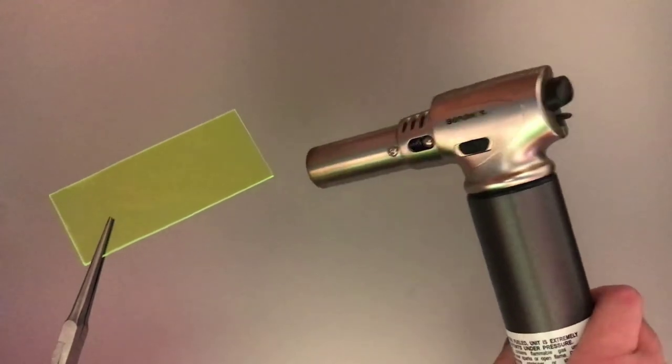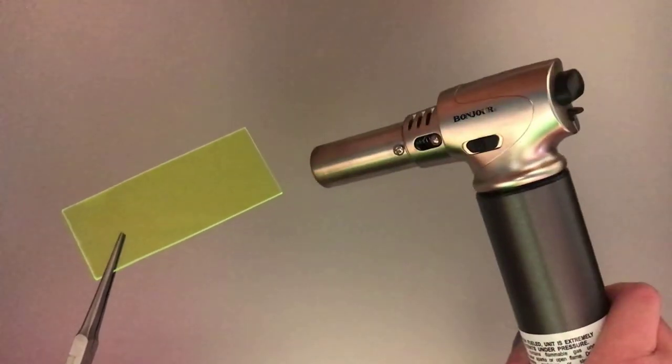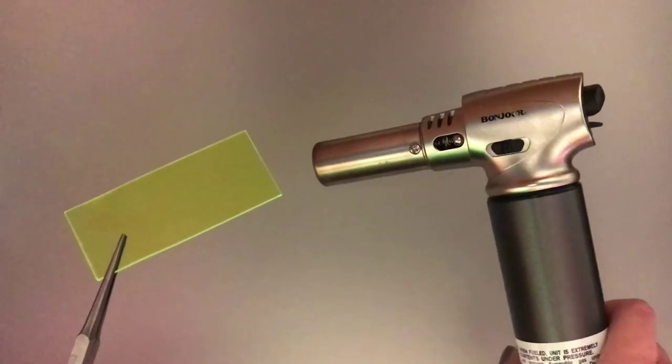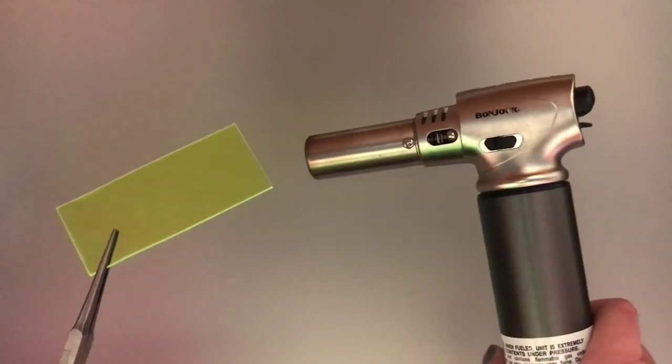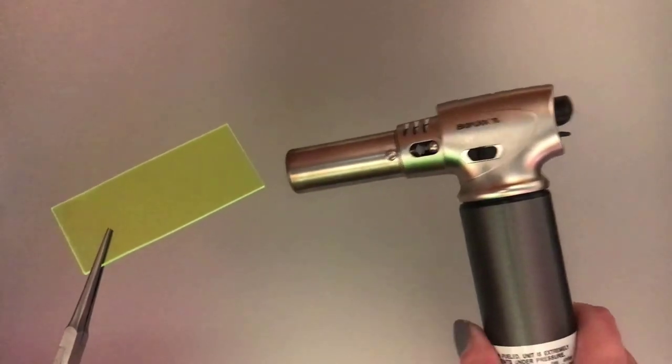This is your standard butane torch, a kitchen torch that runs about $30. You can use a smaller torch or even your gas stove if you want. Just be careful.